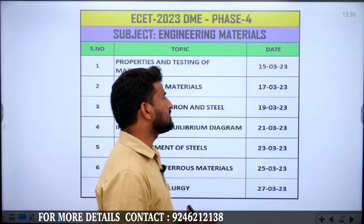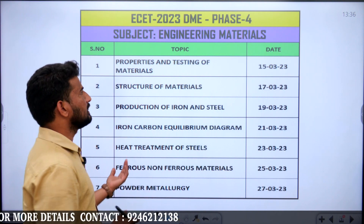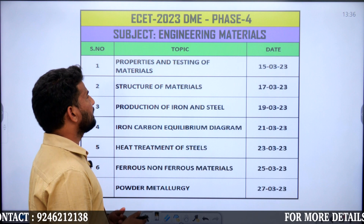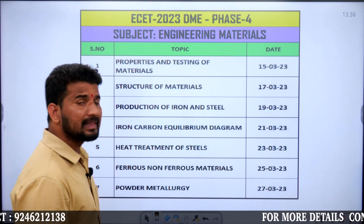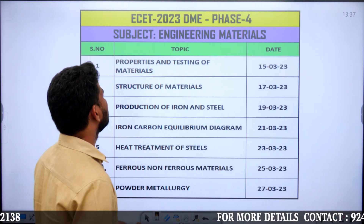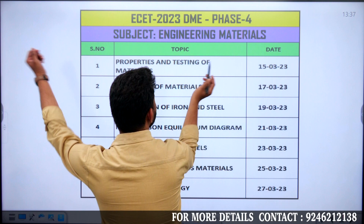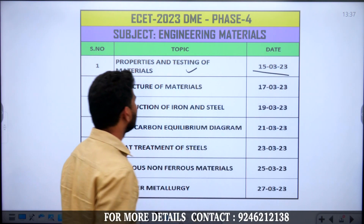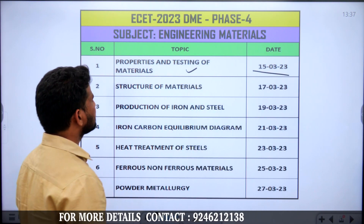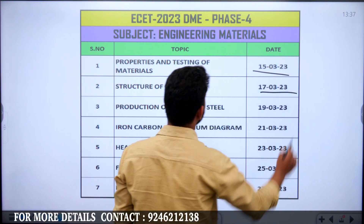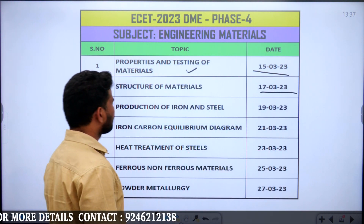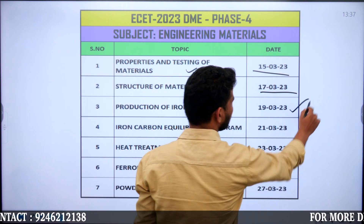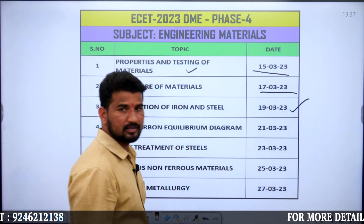The subject which is going to be conducted in this phase will be Engineering Materials. The first topic will be properties and testing of materials, which will be conducted on the 15th of this month. The next topic will be structure of materials, going to be conducted on the 17th of this month, and production of iron and steel, which will be conducted on the 19th of March.